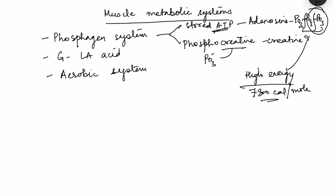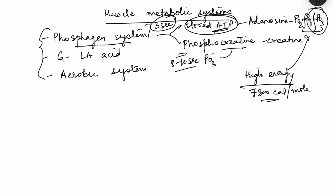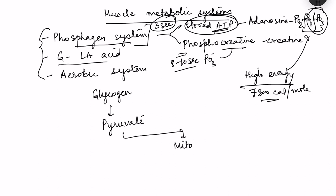Why do we need to know about these three systems and how are they different? First, consider the duration for which they last. The phosphagen system lasts very little — stored ATP lasts only about three seconds, and total stored creatine phosphate is used up in around 8 to 10 seconds. After the stored energy is used, the glycogen lactic acid system comes into play, where glycogen is broken down into pyruvate, which can enter mitochondria for full oxidation, releasing a lot of ATPs.